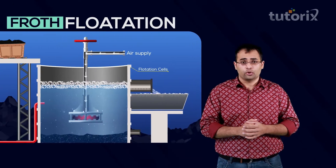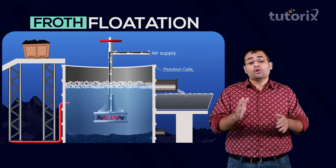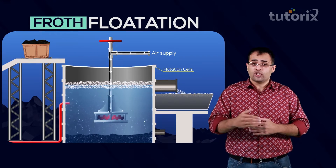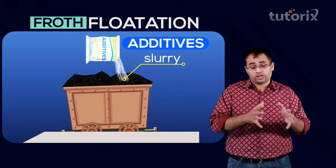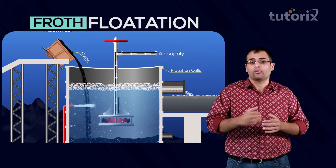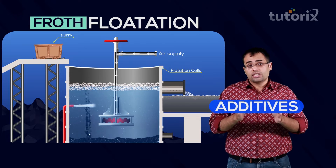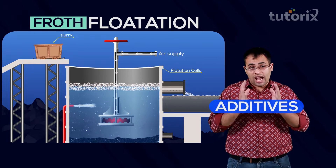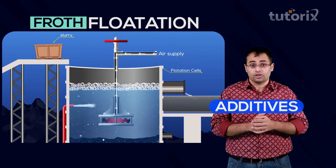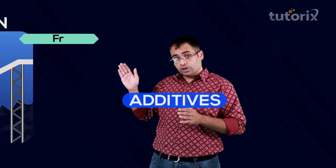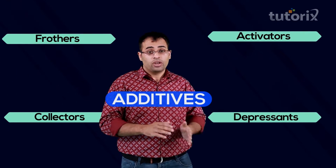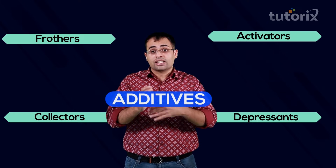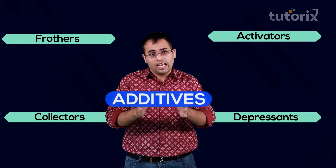Let us discuss another detail of this process. To carry out froth flotation efficiently, various types of additives are added into the slurry or suspension at various stages of the process. There are basically four types of additives: frothers, collectors, activators, and depressants. Let us understand each of these additives in detail one by one.